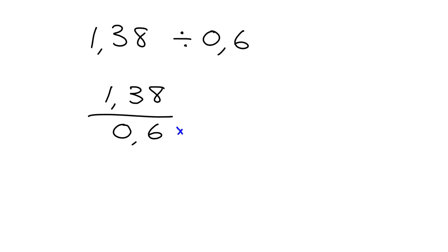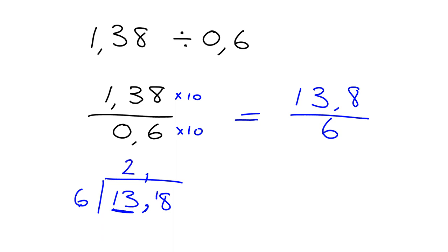So I need to get rid of the decimal comma at the bottom. How can I do that? Easy. Multiply by 10. But if I want to make an equivalent fraction, what I do to the bottom I must do to the top. So let's multiply the top of this fraction by 10. And so this is exactly the same as 13.8 over 6. Now that is easy to calculate. I line up the commas and I go: 6 into 1 can't go. So 6 into 13, that goes twice, that's 12, remainder 1. And 6 into 18 goes 3 times. And so my answer is 2.3.